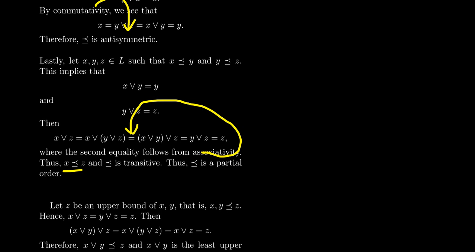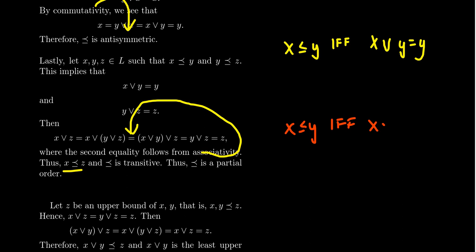So we get this partially ordered set. Every semi-lattice has a natural partially ordered set relation. Notice the direct correspondence: idempotency implied reflexivity, commutativity implied anti-symmetry, and associativity implies transitivity. I want to note that the way we defined it — X ≤ Y if and only if X join Y equals Y — is not how everyone works with semi-lattices. Some people go the other way and say X ≤ Y if and only if X join Y equals X, which gives the reverse partial order. Given any partial order on a set you can always turn it around, so don't lose too much sleep over this.